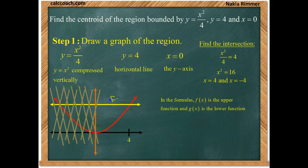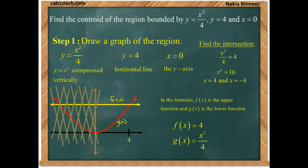That's going to be our f of x. The lower function is going to be the parabola, y equals x squared over 4, upper minus lower. Every place we see an f of x, we'll put a 4. Every place we see a g of x, we'll put x squared over 4.